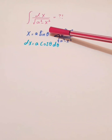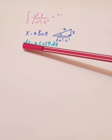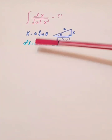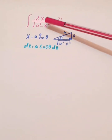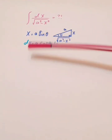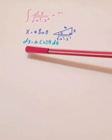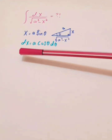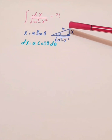Now let's apply this. Taking the differential of both sides: on the right side, the derivative of sin(θ) is cos(θ), so we get dx = a·cos(θ)dθ on the right side, and dx on the left side.